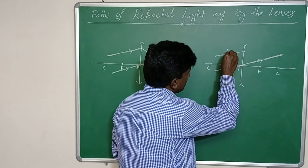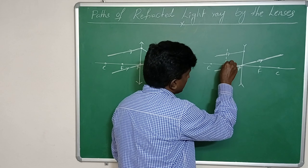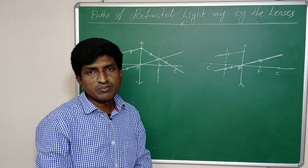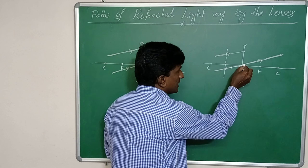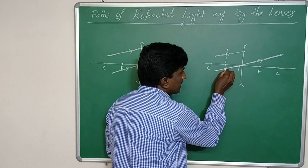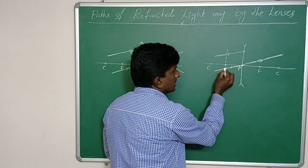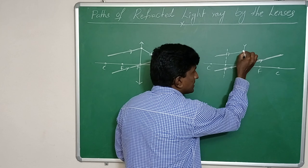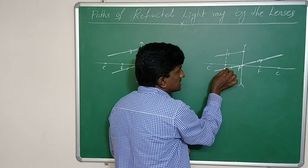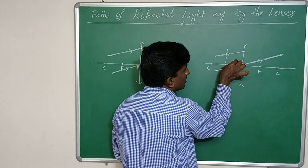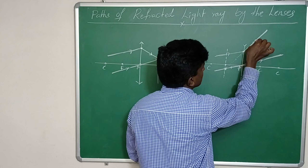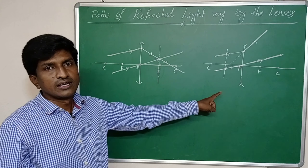The focal plane is a line passing from the focal point and normal to the principal axis. The light ray passing from the optical center intersects the focal plane at a certain point. Now combine this point with the point where the incident light ray intersects the concave lens, draw a straight line and prolong it — this is the path of the refracted light ray through the concave lens.